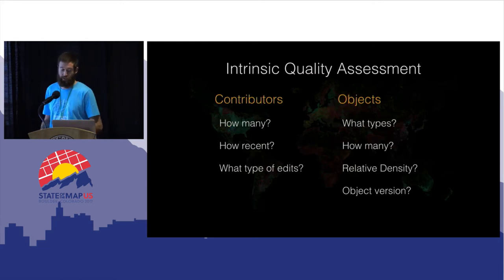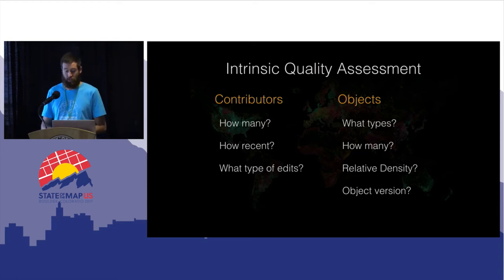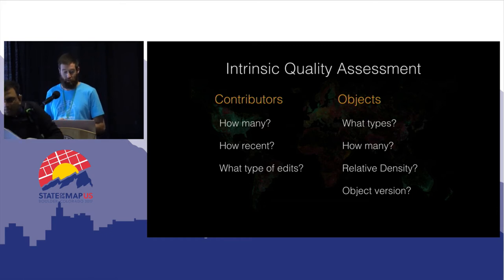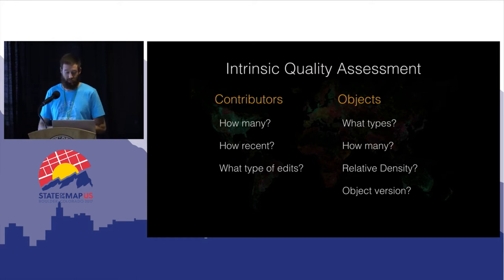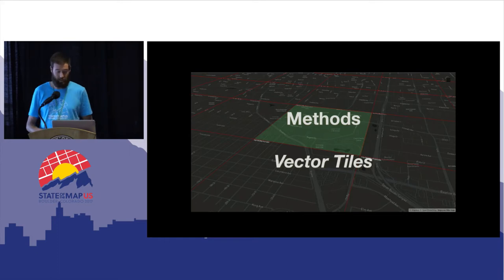These are some of the attributes of the map we'll be exploring. Contributor information refers to the specific user ID associated with an edit to an object on the map. We can count the users, see when users are active, and identify specific types of edits per user — for example, did they change the object's name, did they add a speed limit? For map objects we ask questions about their type, count, and relative density.